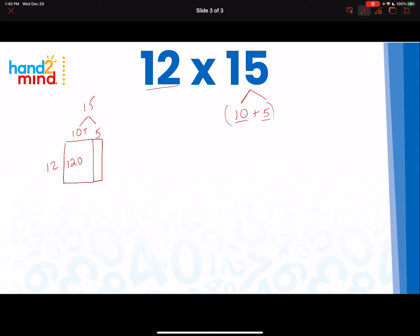So 12 times 5, well, I know that's half of what 12 times 10 is so that's 60. So 120 plus 60 is 180. So this is an example of using partial products to find your answer.